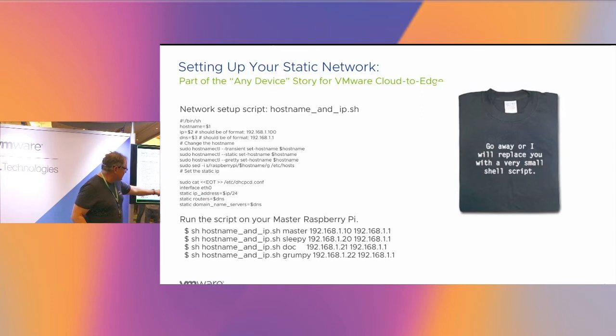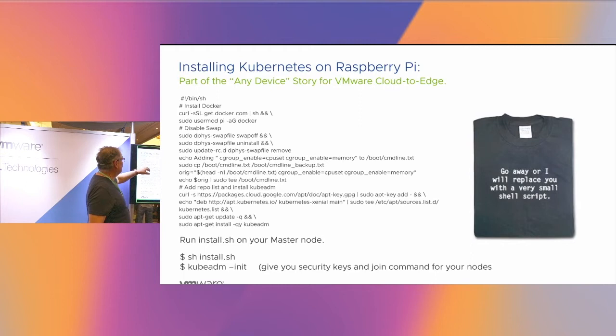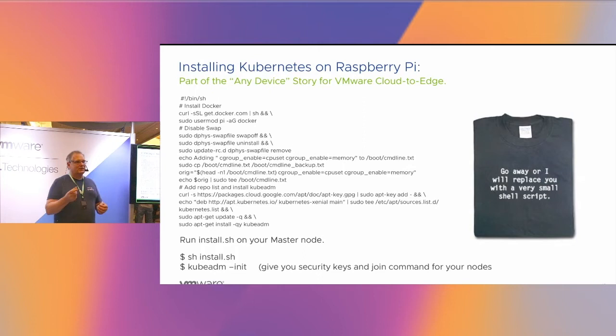Now you have static IP addresses. You have to actually go install some stuff — you have to install Docker, because Docker has to be on the master node and the worker nodes. We also have to disable swap. On a Raspberry Pi 3 with only one gig of memory, the OS takes about 500 meg and Kubernetes wants 400 meg. If you try to run them both together, the OS starts swapping and everything falls apart.